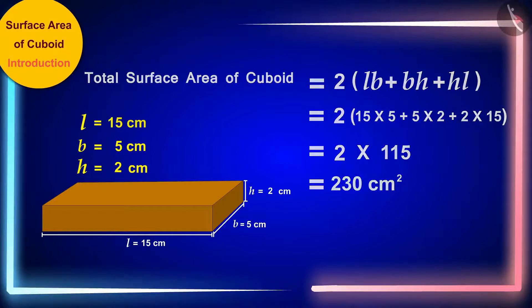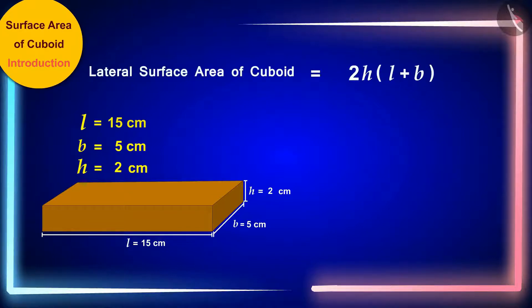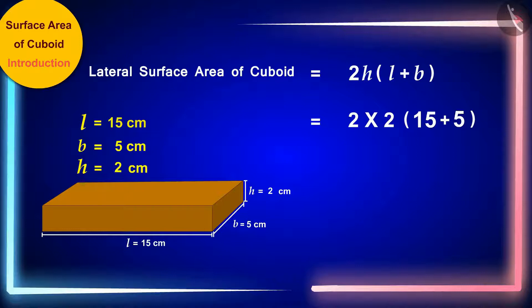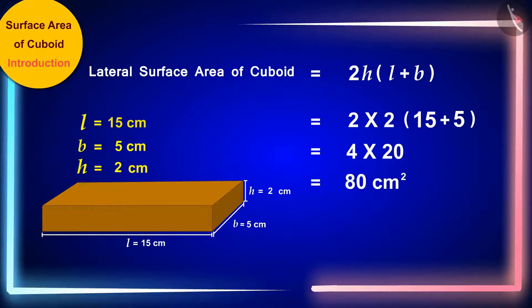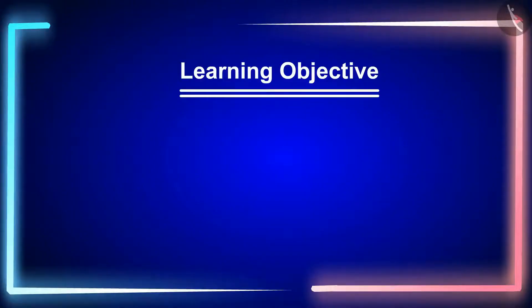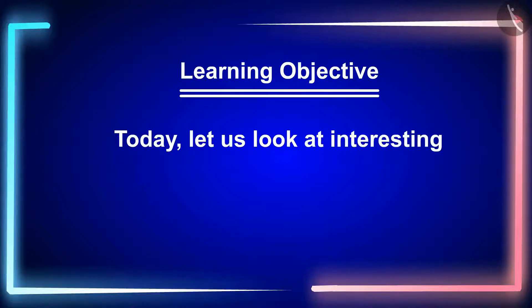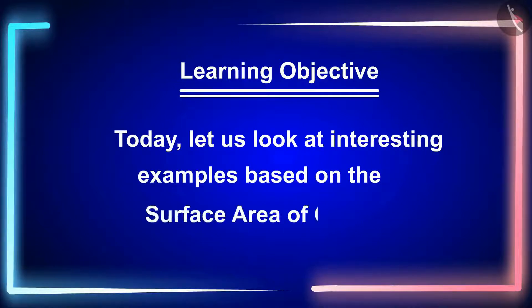Now in the same way, we will also write the length 15 cm, width 5 cm and height 2 cm respectively in place of L, B and H in the formula for lateral surface area of the cuboid. The lateral surface area of the cuboid is 80 cm². Well done friends, your answer is absolutely correct. Now in this video today, let us look at interesting examples based on the surface area of cuboid.